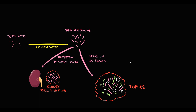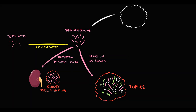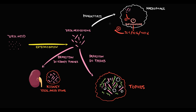Usually gout remains in the chronic phase, so all uric acid crystals are just components of the tophus. But at some point, inside the joint, when macrophages phagocytose uric acid crystals, a huge amount of crystals can trigger activation of the inflammasome inside macrophages. With inflammasome activation, interleukin-1, interleukin-6, and tumor necrosis factor alpha begin to be produced — all proinflammatory mediators that activate neutrophils.